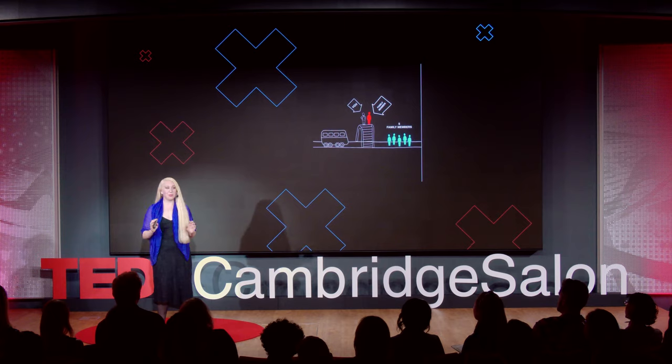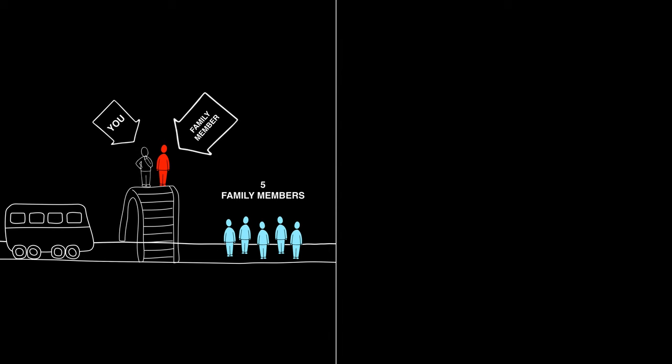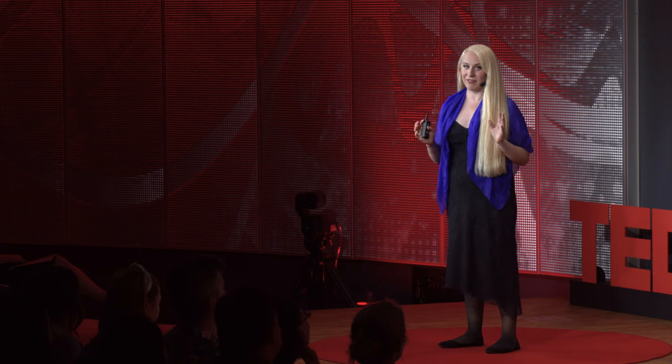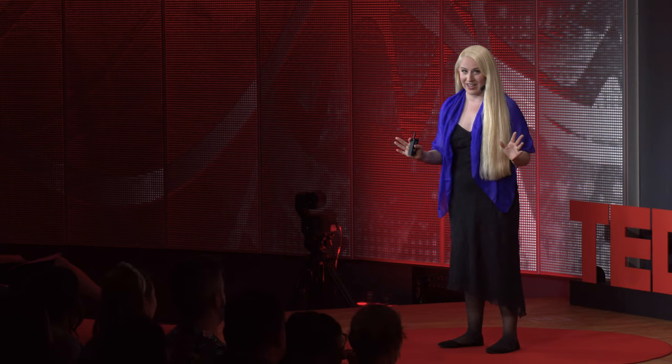Another situation where plausible deniability matters less is with our family members. With our family, we care less about what other people think and more about consequences. We evolved to care about consequences with our family because we share genes with them, and so we expected that with family it wouldn't matter so much whether consequences were caused by action or inaction. We found that more people were willing to push a family member wearing a heavy backpack in front of a train to save five family members than were willing to push a stranger to save five strangers — despite the fact that pushing a family member in front of a train had to be even more horrifying to imagine.